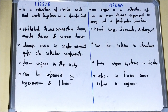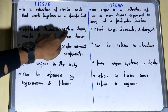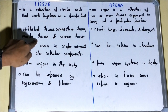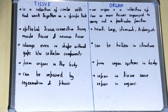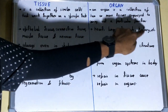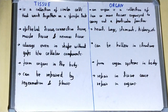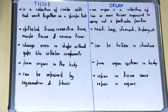If we talk about examples, then epithelial tissue, connective tissue, muscle tissue, and nervous tissue are examples of tissues. But if we talk about organs, then heart, lung, stomach, and kidney are examples of organs.